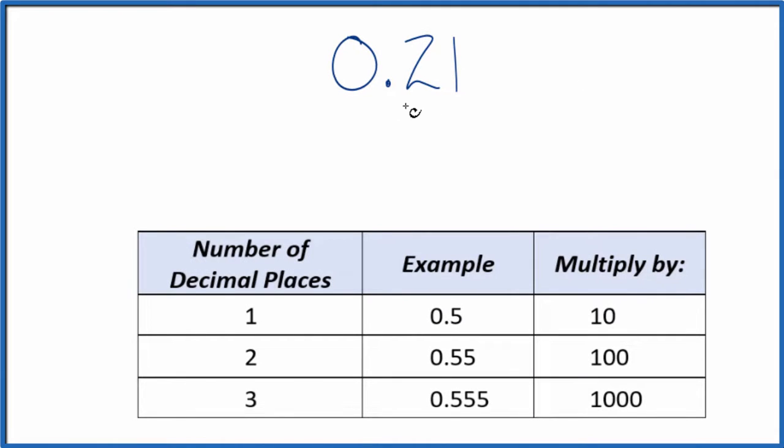Okay, we want to write the decimal 0.21 as a fraction. So the first thing we can do is we could just put 0.21 over 1, and that's the start of a fraction. It's still equal to 0.21 because we're just dividing by 1.